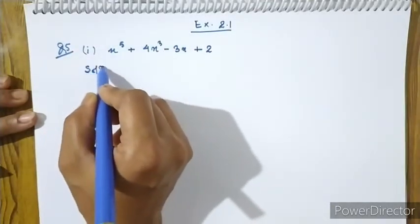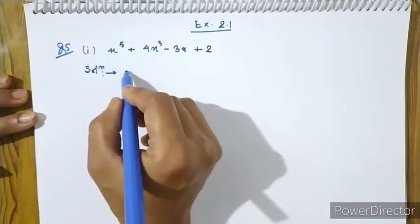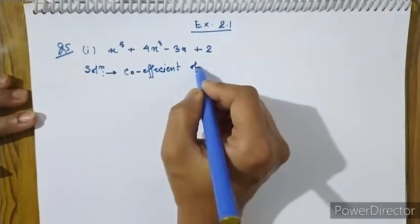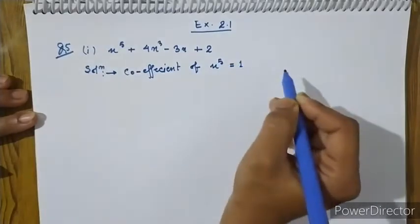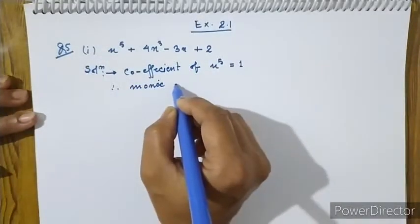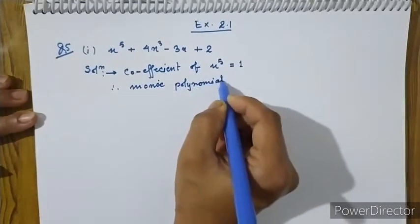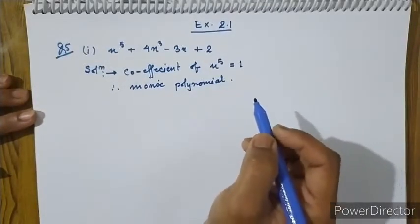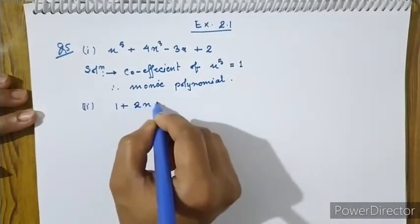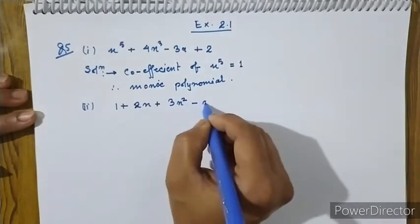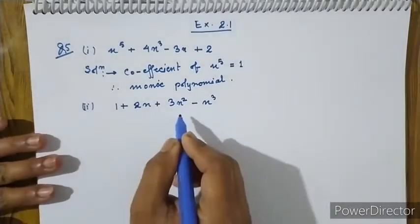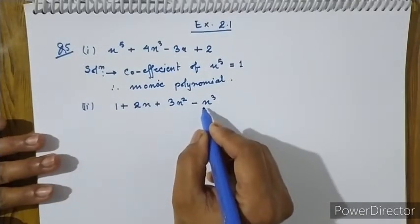Then from number one: x to the power 5 plus 1 plus 2x plus 3x squared minus x cubed. Then x to the power 5 plus 2x cubed minus 1.